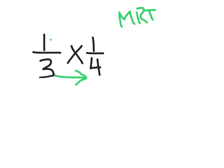Okay, like this and like this. So 1 times 1 equals 1 out of 3 times 4 equals 12.